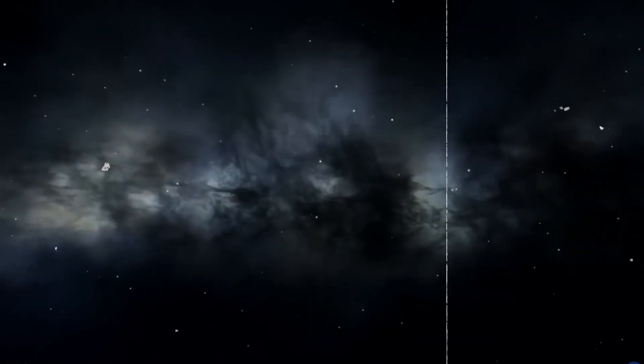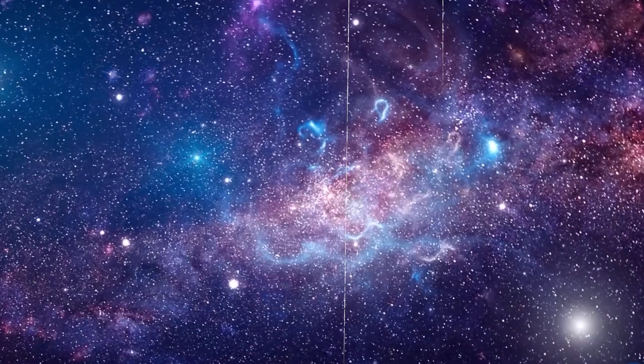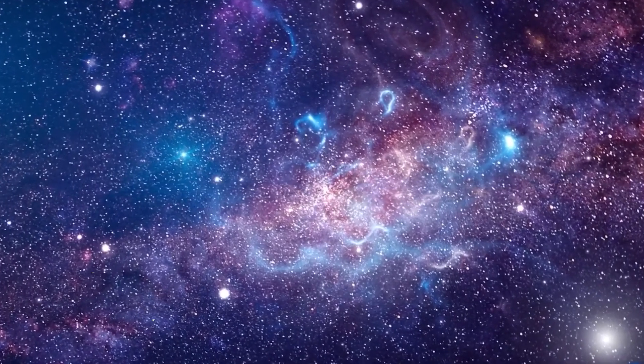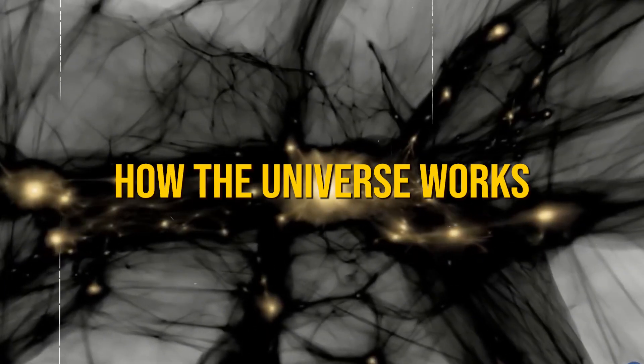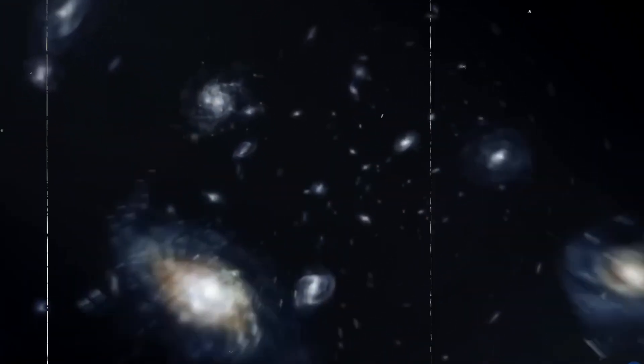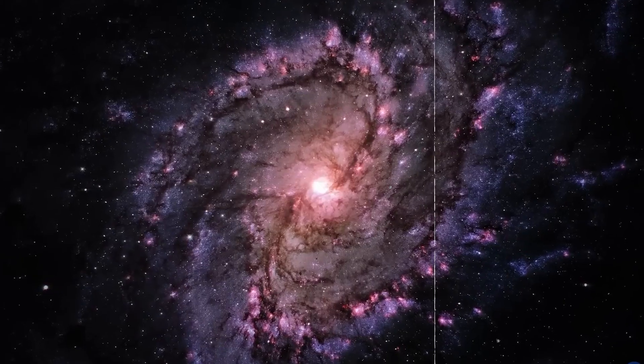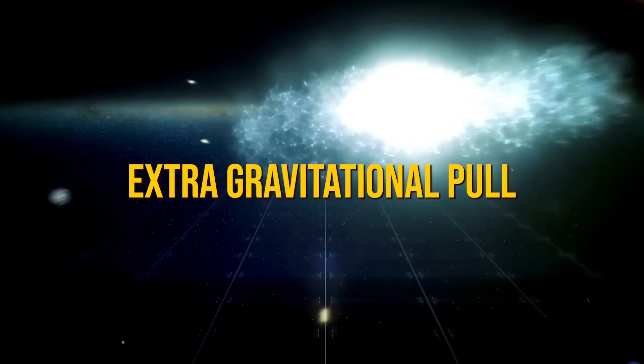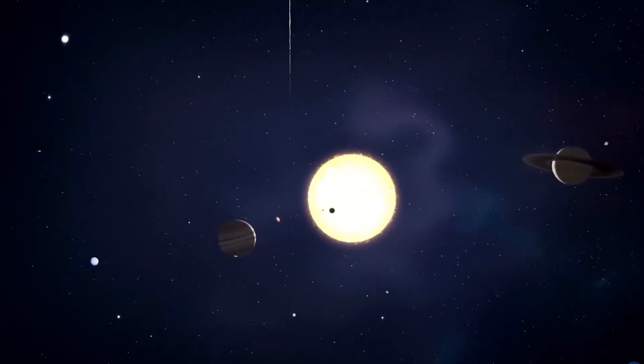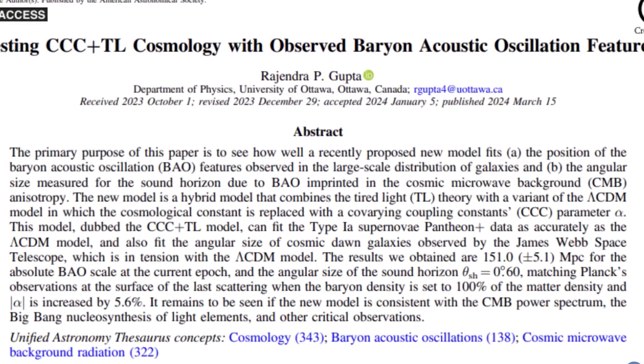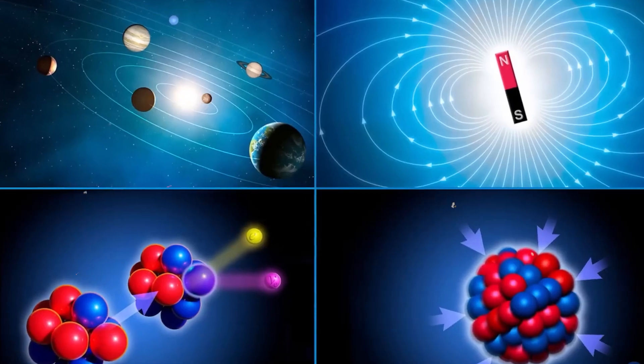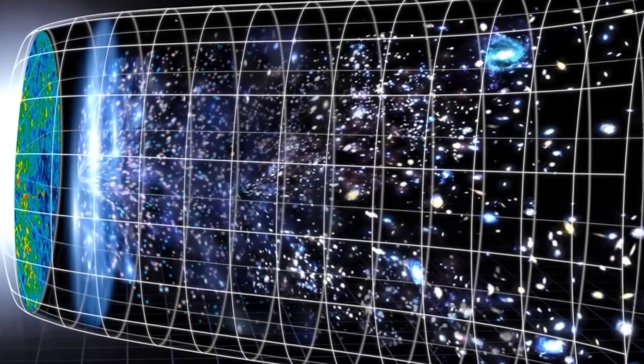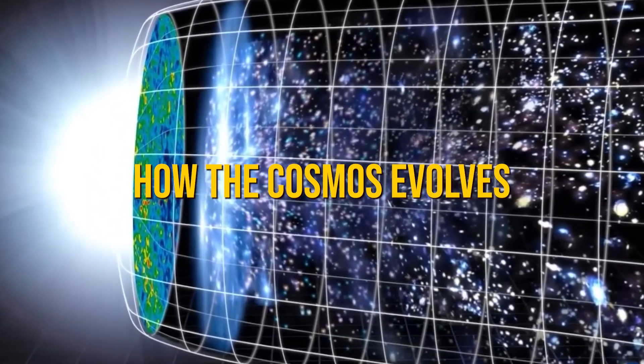The idea that dark matter might not exist isn't just a scientific oddity. It's a big deal that makes us rethink how the universe works. Without dark matter, the universe's gravitational setup changes a lot. Dark matter was thought to give galaxies the extra gravitational pull they needed to form and stay together while the universe expands. But Gupta's model says these things might happen because the basic forces of nature change over time, giving us a new way to understand how the cosmos evolves.